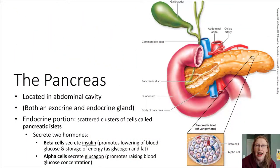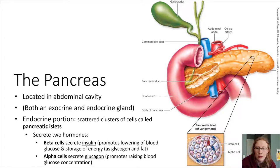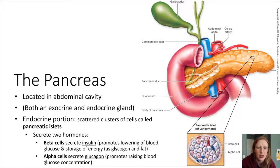The pancreatic islets contain two types of cells, and these cells secrete insulin and glucagon. We're going to focus in on insulin for right now — what does insulin do and how does it do what it does?